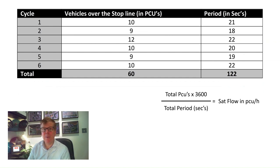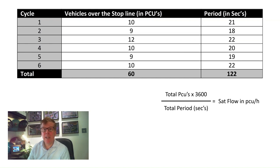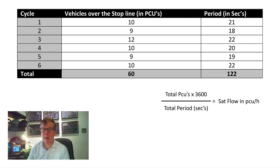At existing junctions, the preferred method is to measure the sat flow. This is achieved by counting the number of PCUs which cross the stop line in a saturated period and the time taken. Ignore the first few seconds of green time to account for the starting lag in the waiting vehicles — count from approximately the fourth vehicle crossing the stop line. Count simultaneously the number of vehicles and the time period until the end of the green period or until approaching traffic is no longer saturated. Repeat to achieve a minimum sample of 50 PCUs. In this example, 60 PCUs in 122 seconds is equivalent to 1,770 PCUs per hour.